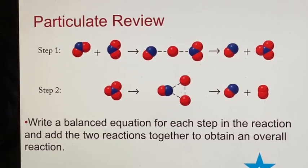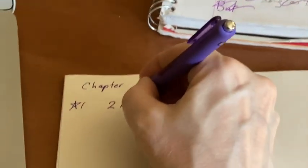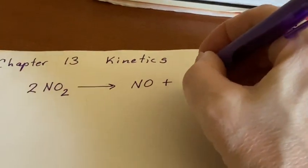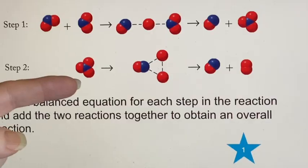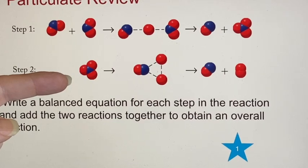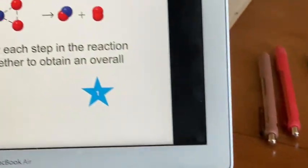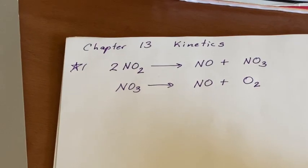Those happen to be the same thing. But what I'd like to do then is to write it as being that there are two nitrogen dioxides. And then I go and I see my arrow, nitrogen monoxide and nitrogen trioxide. So that's my first step. Here's nitrogen trioxide. But ultimately we ended up with nitrogen monoxide and oxygen diatomic.